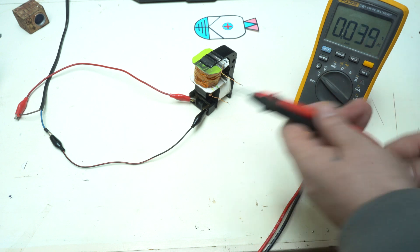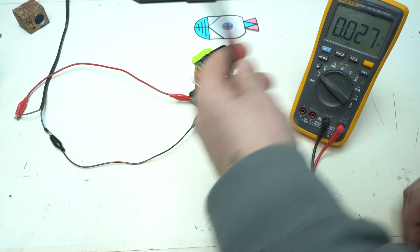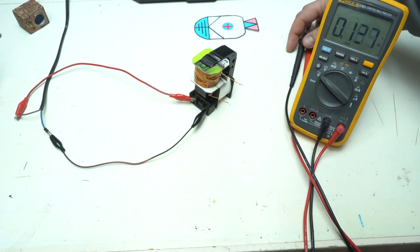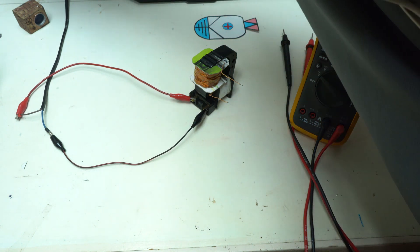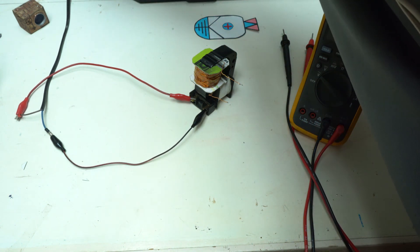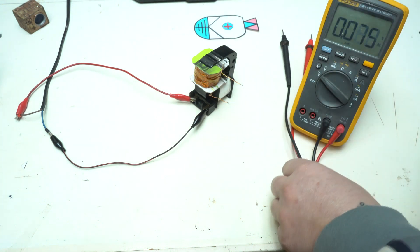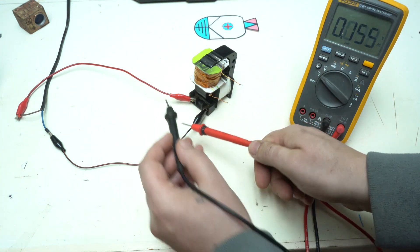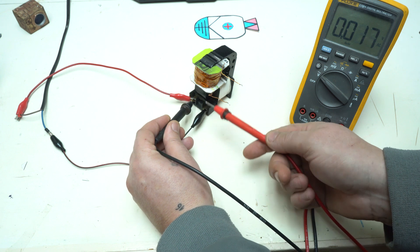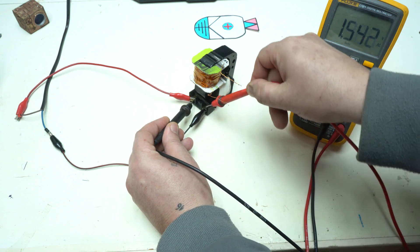Here I have my digital multimeter just to measure the voltage of input and output. Plug it in. On these alligator clips we have 220 volts AC.